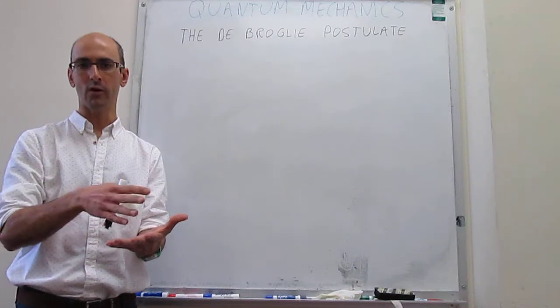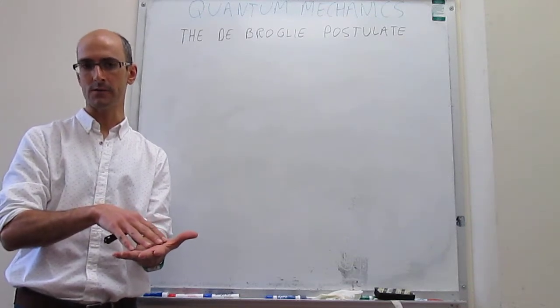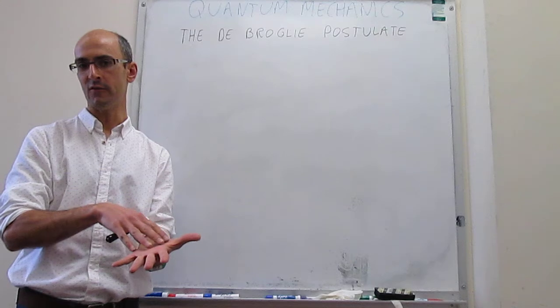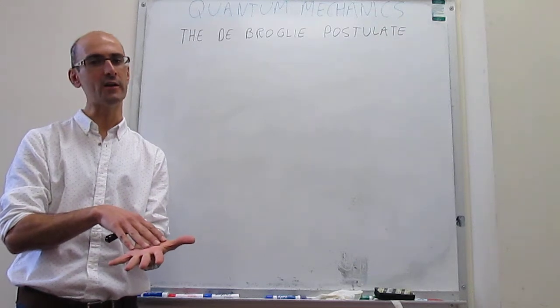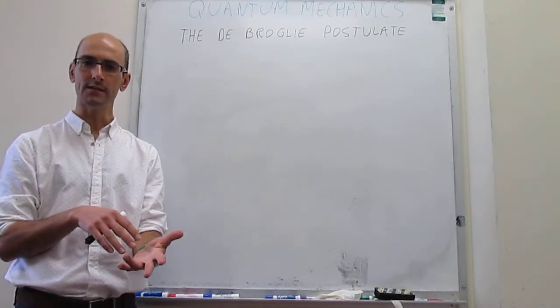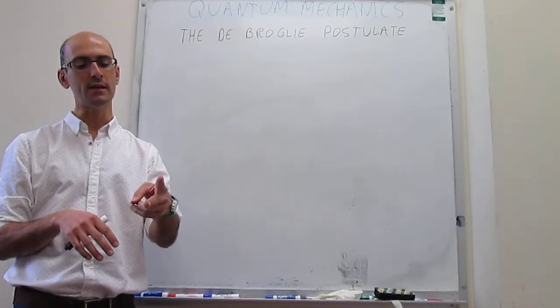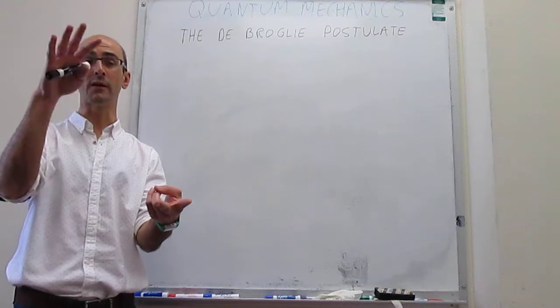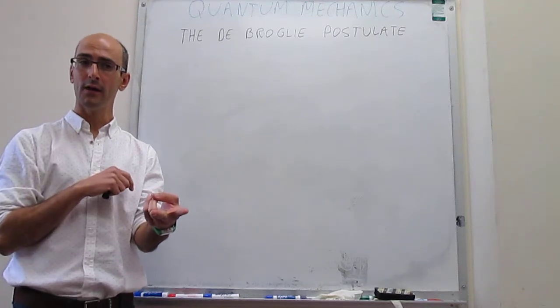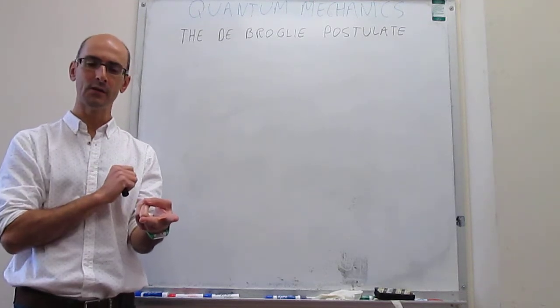So here's what the de Broglie postulate is about. The idea is that quantum mechanics can be used to explain these very small particles. But those small particles have very unusual properties. So what de Broglie did is take Einstein's ideas and actually flip them backwards. The idea is that Einstein said that electromagnetic radiation, which is a wave, even though it doesn't have a mass, it has particle properties.